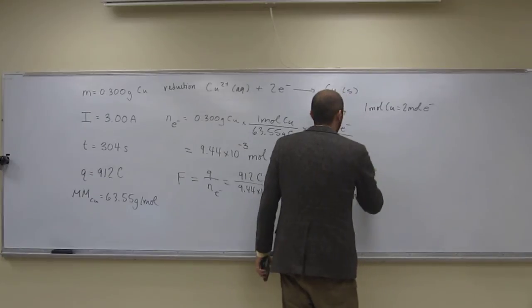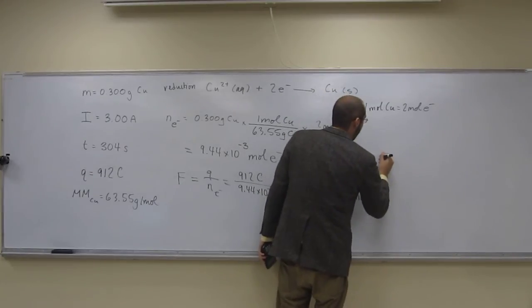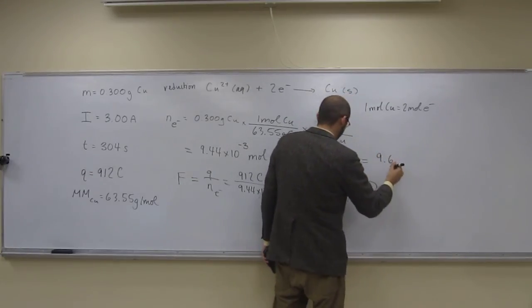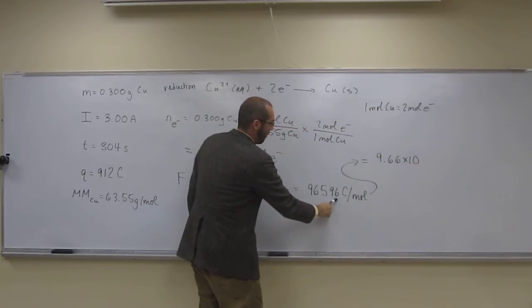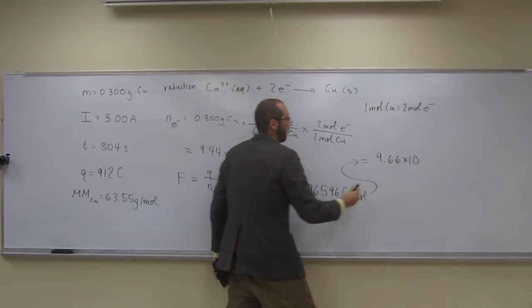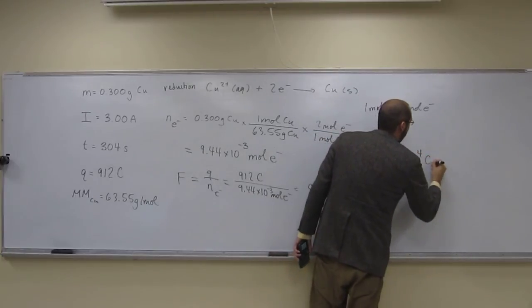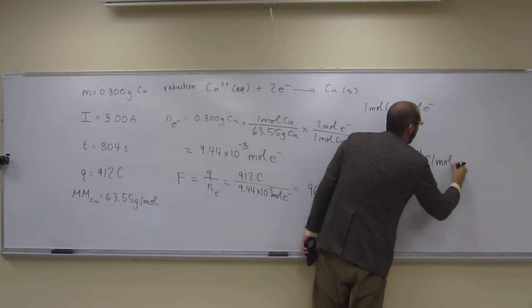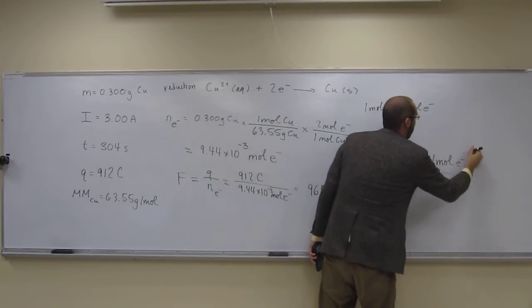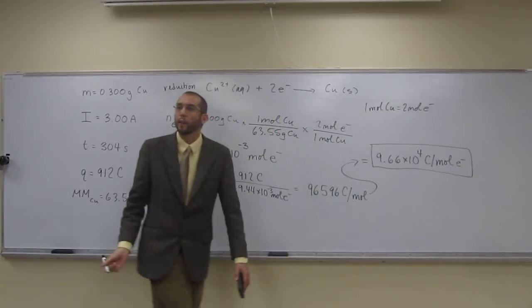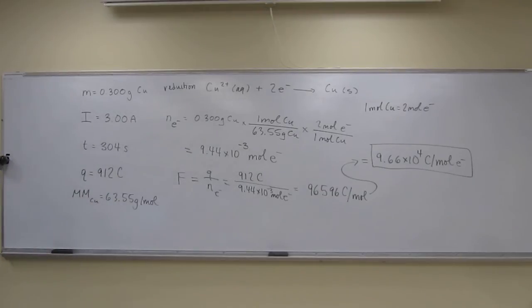So let's put this to the right number of sig figs. So 9.66 times 10 to the 4 Coulombs per mole of electrons. That would be the calculated Faraday's constant. Are there any questions about that?